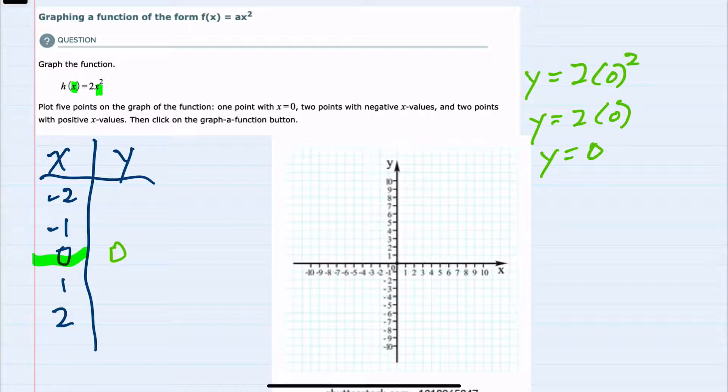So our first point is 0, 0. I'll go ahead and graph that. And then for our next coordinate, we'll substitute in x equals 1.